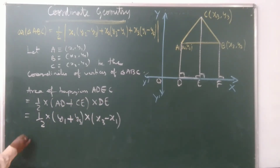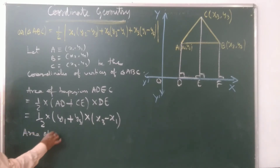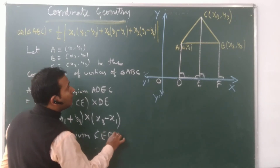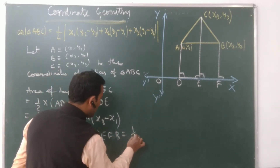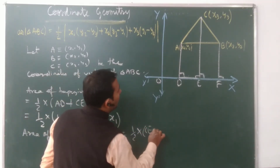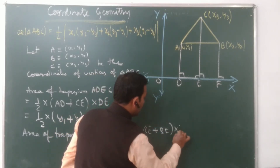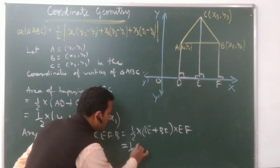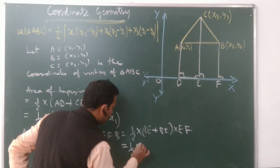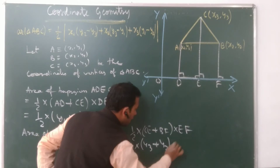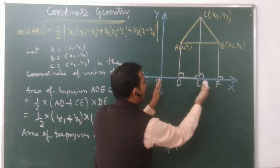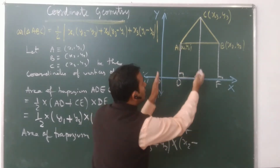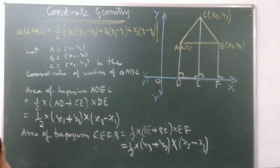Similarly, area of trapezium CEFB: the parallel sides are CE equals Y3 and BF equals Y2, and the height EF equals OF minus OE, which is X2 minus X3. So area equals half into (Y3 + Y2) into (X2 − X3).